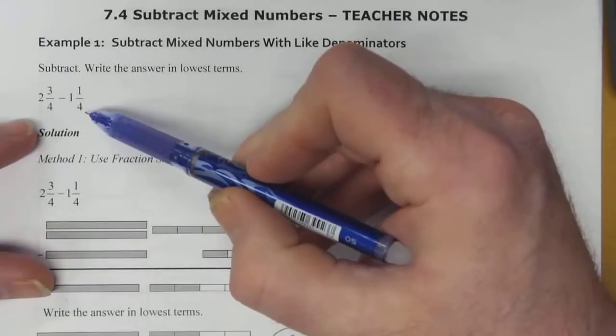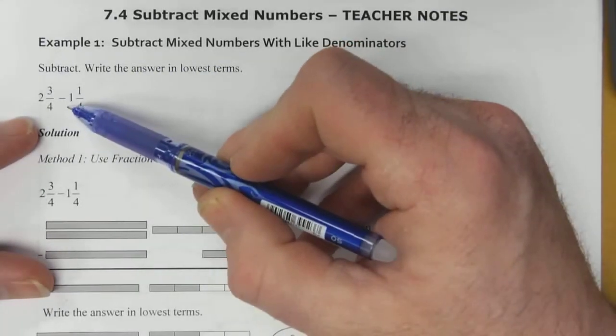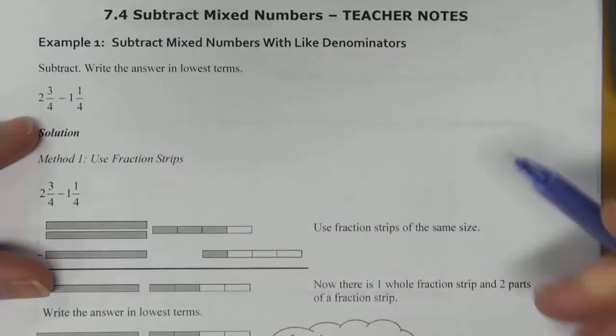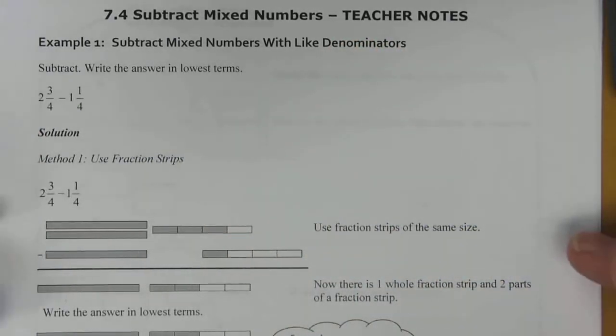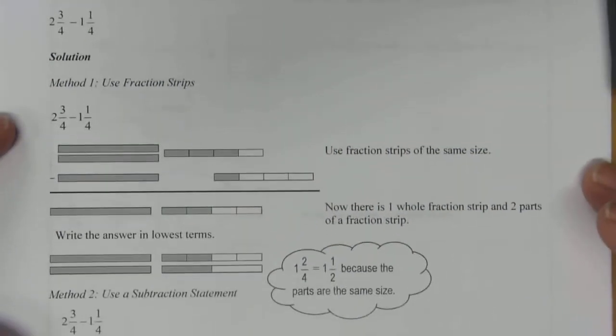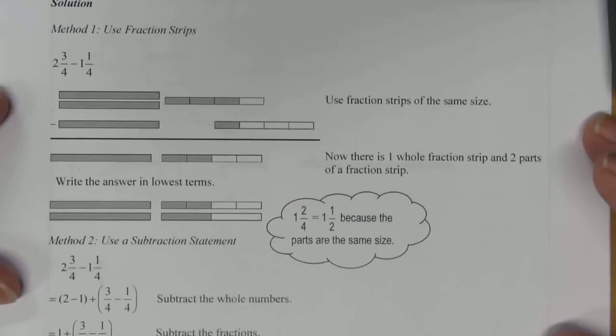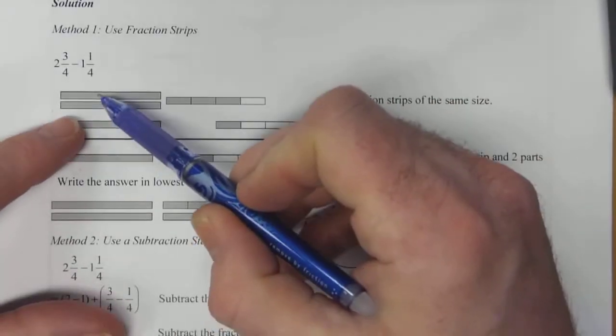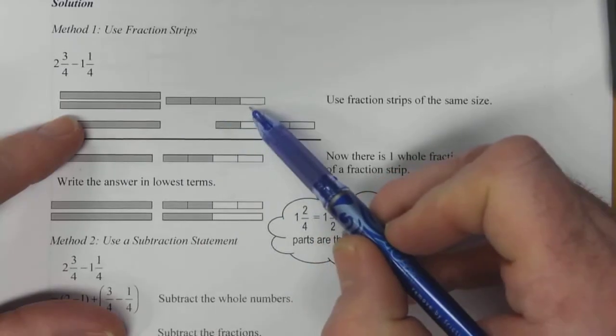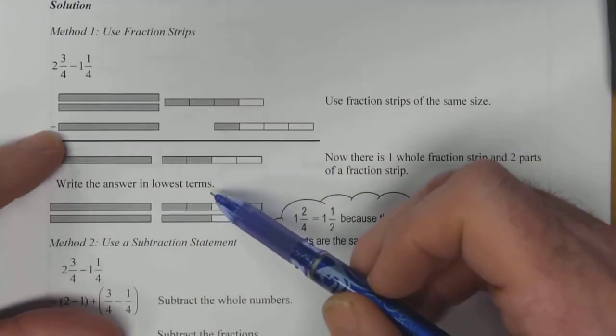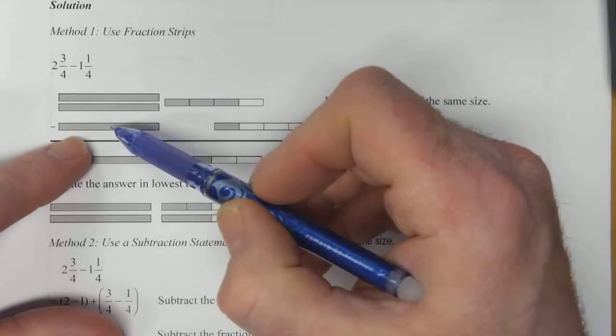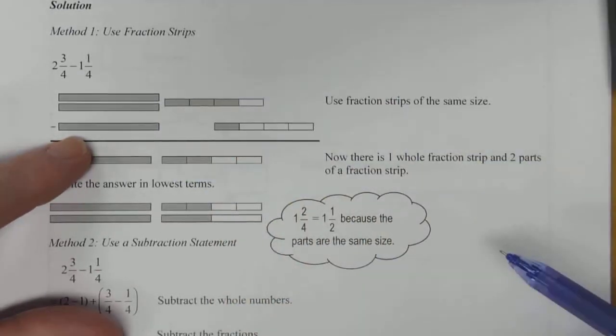So here's an example question here: 2 and 3 quarters minus 1 and 1 quarter. Our first technique is going to be using fraction strips, and here we've got it illustrated. We have two full ones and then three quarters representing the first mixed number, and then subtract one full one and one quarter of a strip.